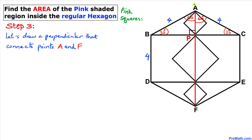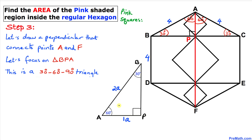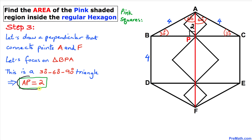I've connected point A and point F through a perpendicular line. Focusing on triangle BPA, we can see this is a 30-60-90 triangle. In a 30-60-90 triangle, if side AP is one unit, the hypotenuse AB is twice as much. Our hypotenuse is 4, so side AP is half of that, which means AP equals 2 units.